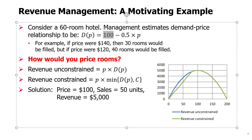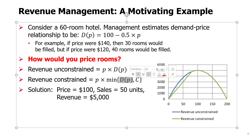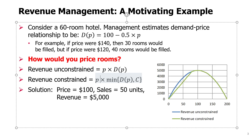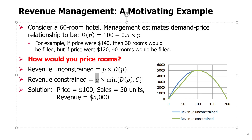It will never make sense to set the price such that demand is higher than capacity. If you reduce the price below the point where demand equals capacity, you lower the revenue without gaining anything on sales — the same sales capped by capacity 60 at a lower price will definitely give you lower revenue. So we can recognize that in all solutions, demand should be less than or equal to capacity if you want to maximize revenue.